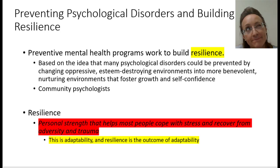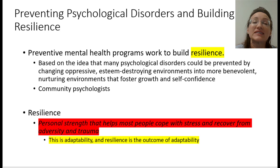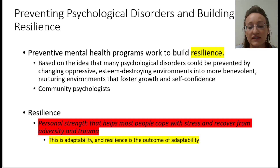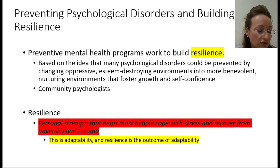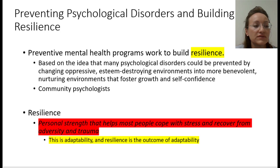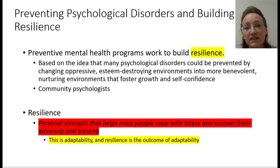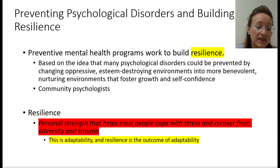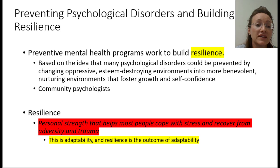The textbook defines resilience as a personal strength that helps most people cope with stress and recover from adversity and trauma. I disagree — I agree with researchers who view resilience as an outcome: unexpected success in the face of disabling circumstances. What predicts that is adaptability, and adaptability draws on your personal strengths, skills, endurance, attitudes, and talents, as well as on your social resources — your friends, family, community, and the systems you're in and how well those support you. If you can use those resources well, then maybe you can achieve that successful outcome even unexpectedly.